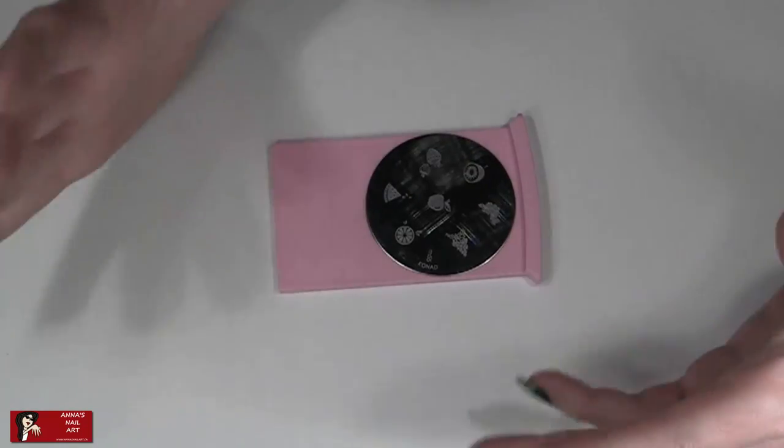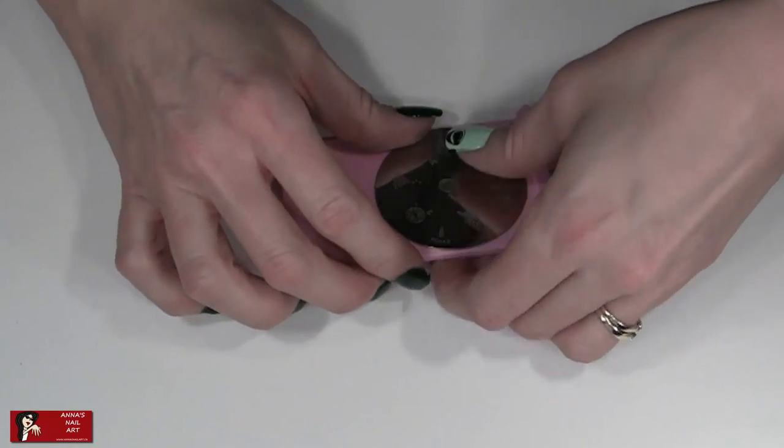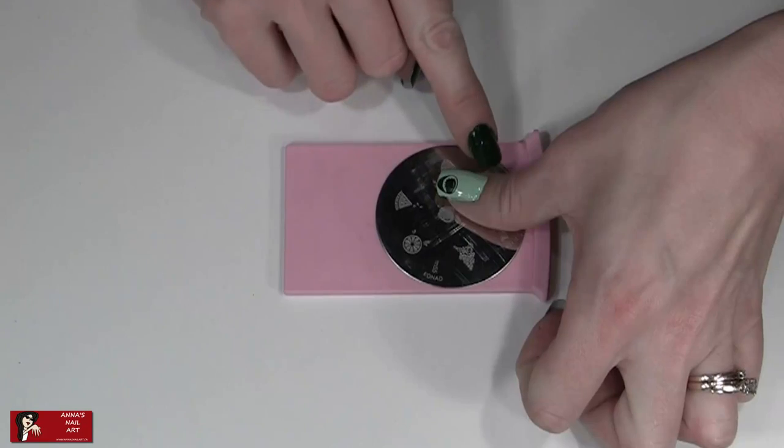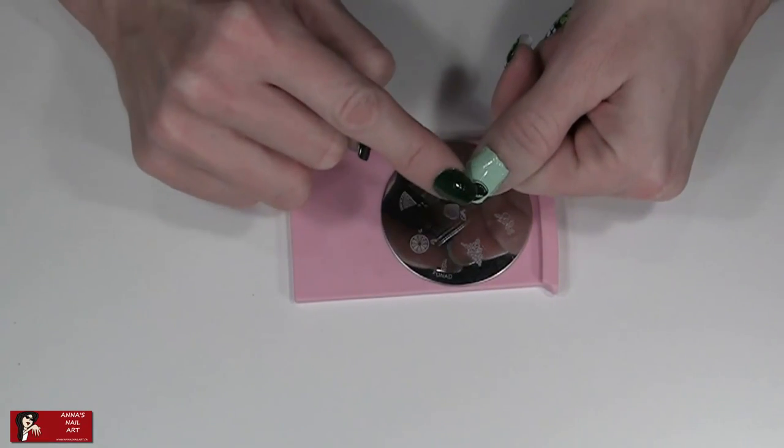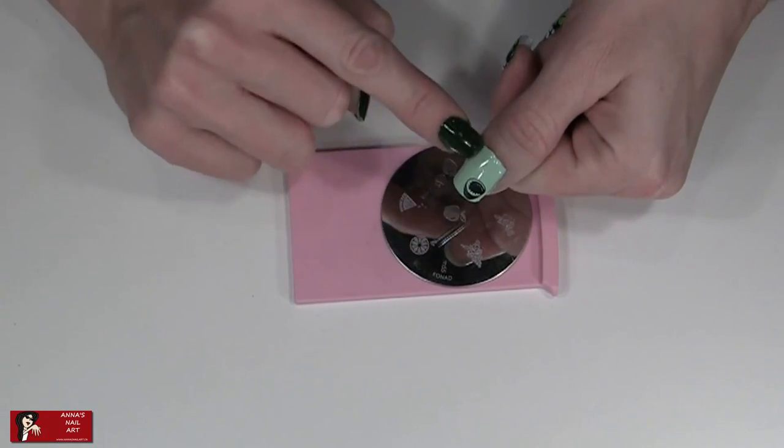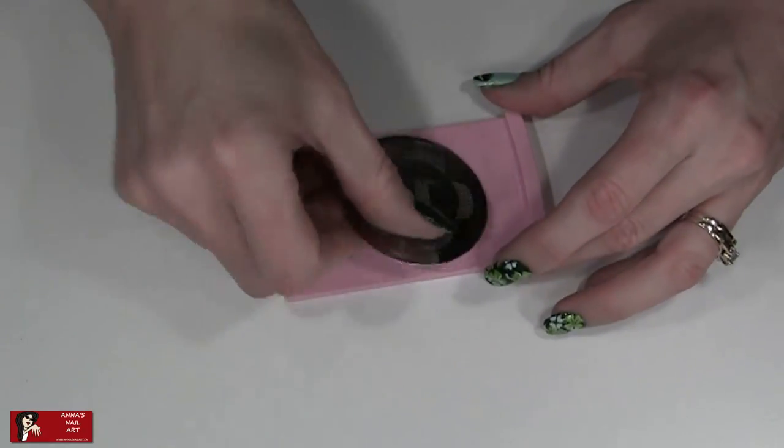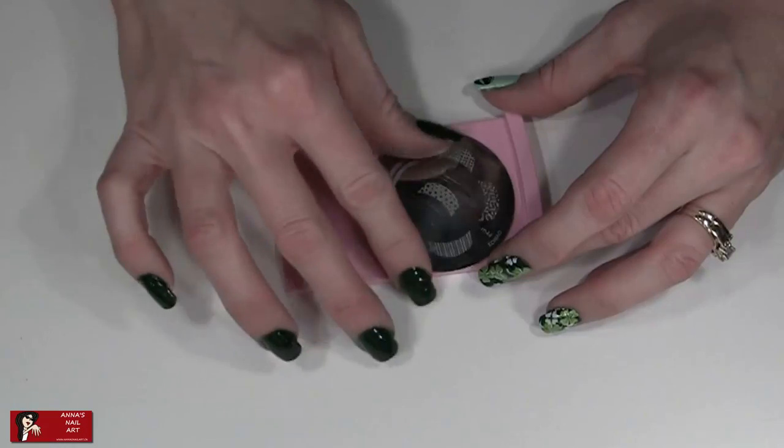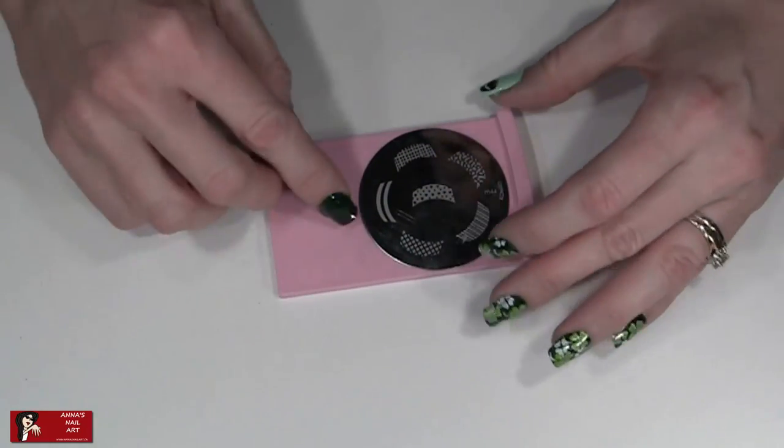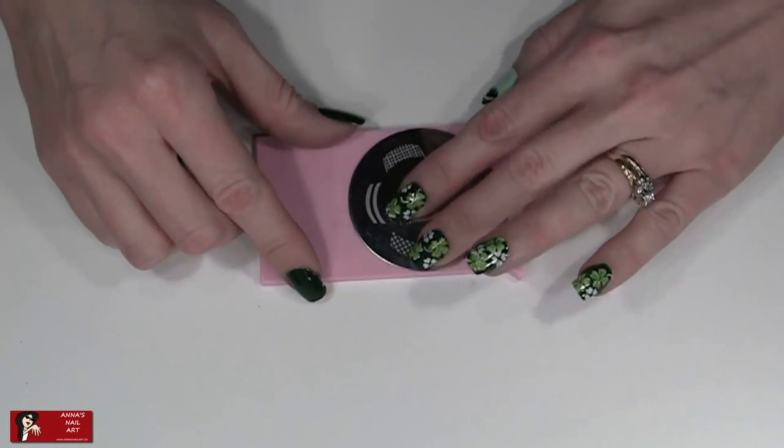Now for our rainbow, I didn't have a rainbow to use either big enough because I wanted to go off the side of my nail like this. So let's switch out our plate. We're going to use M44 now. And this is a French tip plate, but I'm going to use these stripes here to create my rainbow.